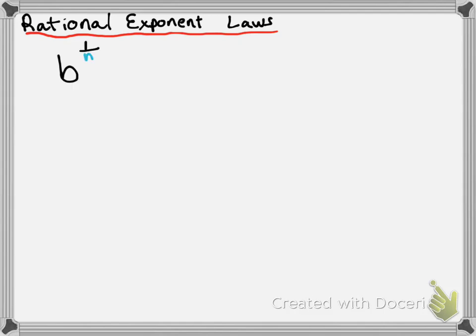In class we talked about how to deal with something like b to the power of 1 over n. We talked about the relationship between this kind of exponent and a radical, specifically how you can transfer between this and a radical. So if we have a power of 1 over n, we can take the nth root of b. So b to the power of 1 over n is the same thing as the nth root of b.